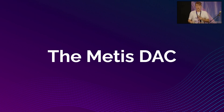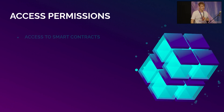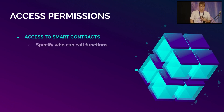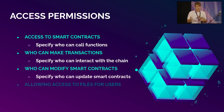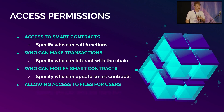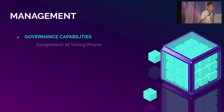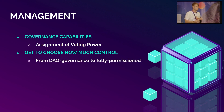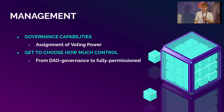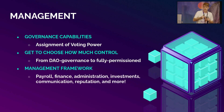I want to describe what a DAC would look like in terms of METI's. First is access permissions — you have access to specific smart contracts, you can specify who can call functions, who can make transactions, and who can modify the smart contracts. There's also a data storage layer giving access to specific users that might need more sensitive information while still operating in a decentralized format. There's also management capabilities and governance — you can assign voting power and choose how much control you want to give to a specific set of people. You also have a management framework that includes payroll, finance, administration, investments, communication, reputation, and much more.